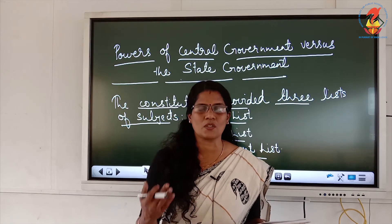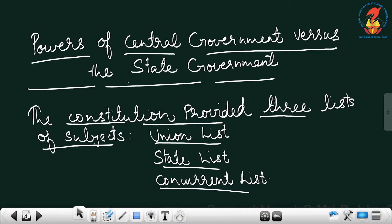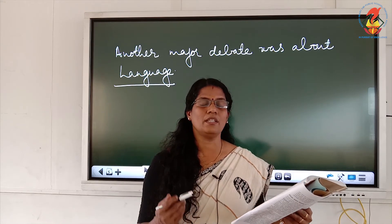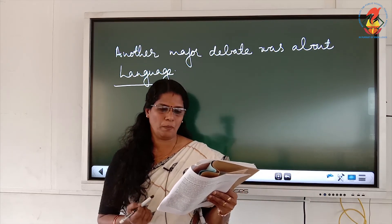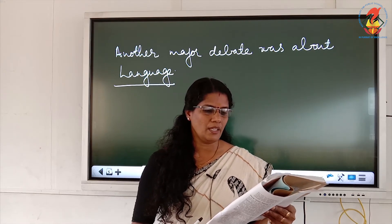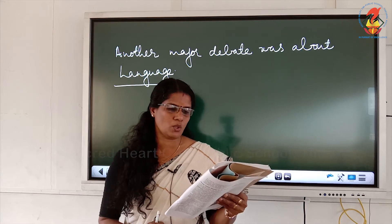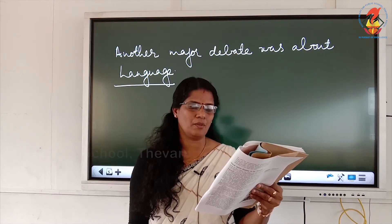The constitutional assembly also discussed the powers of the levels of government — what powers should be given to the central government and what powers to the state governments. The constitutional assembly spent many days discussing the powers of the central government versus those of the state governments. There was a strong opinion that a strong center would be in a position to think and plan for the welfare of the country as a whole, while other members felt that the provinces should have greater autonomy and freedom.